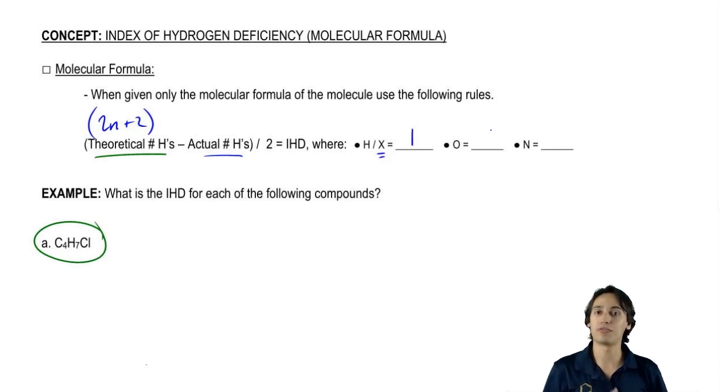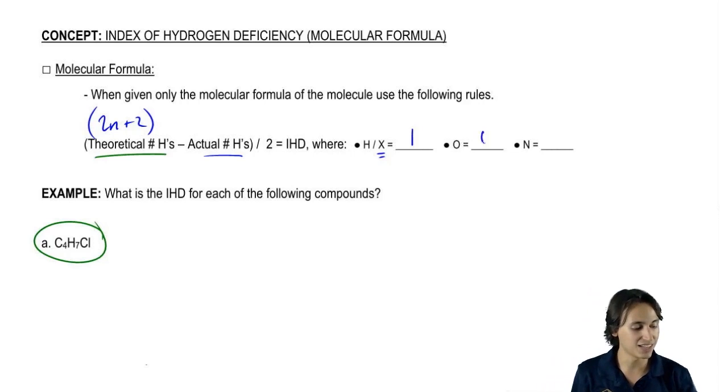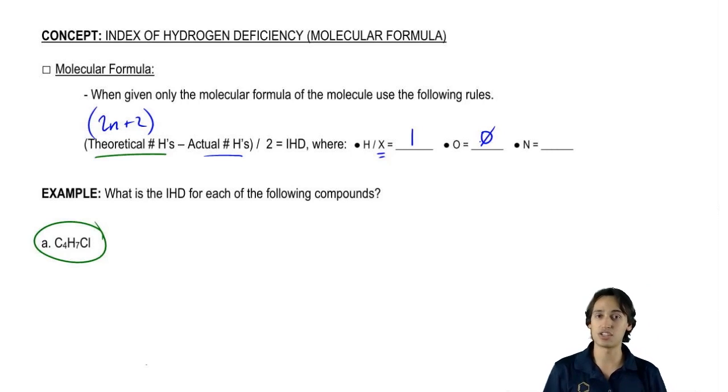So then oxygen. What about if I see an oxygen in my compound? What do I count that as? Actually, I count that as zero. I ignore it. So whenever you see oxygen in this compound, just ignore it. That doesn't go into your equation.